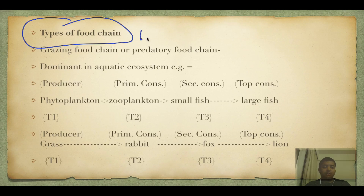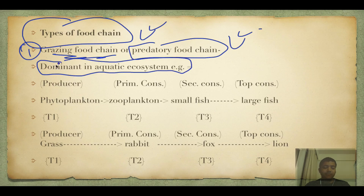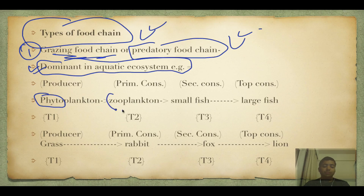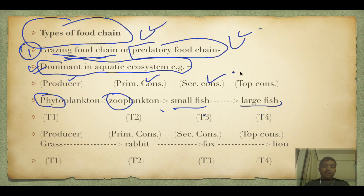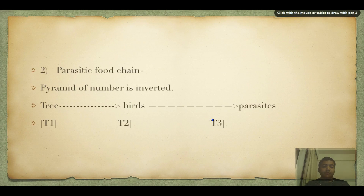Types of food chains: first is the grazing food chain, also called predatory food chain. It is dominant in aquatic ecosystems, though it also exists in terrestrial ones. In aquatic: phytoplankton → zooplankton → small fish → large fish (T1→T2→T3→T4). In terrestrial: grass → rabbit → fox → lion (T1→T2→T3→T4).